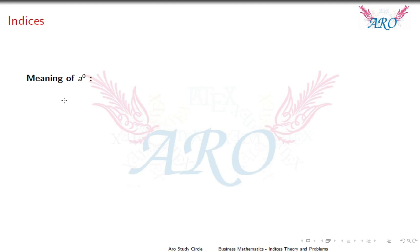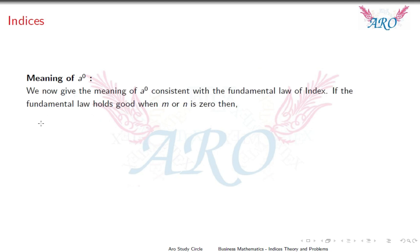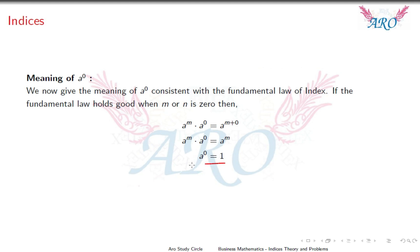Few more results. What is the meaning of A power 0? Anything to the power 0 equals 1. Proof: By the first law, A power M · A power 0 equals A power M plus 0, which equals A power M. Cancelling A power M from both sides, we get A power 0 equals 1.